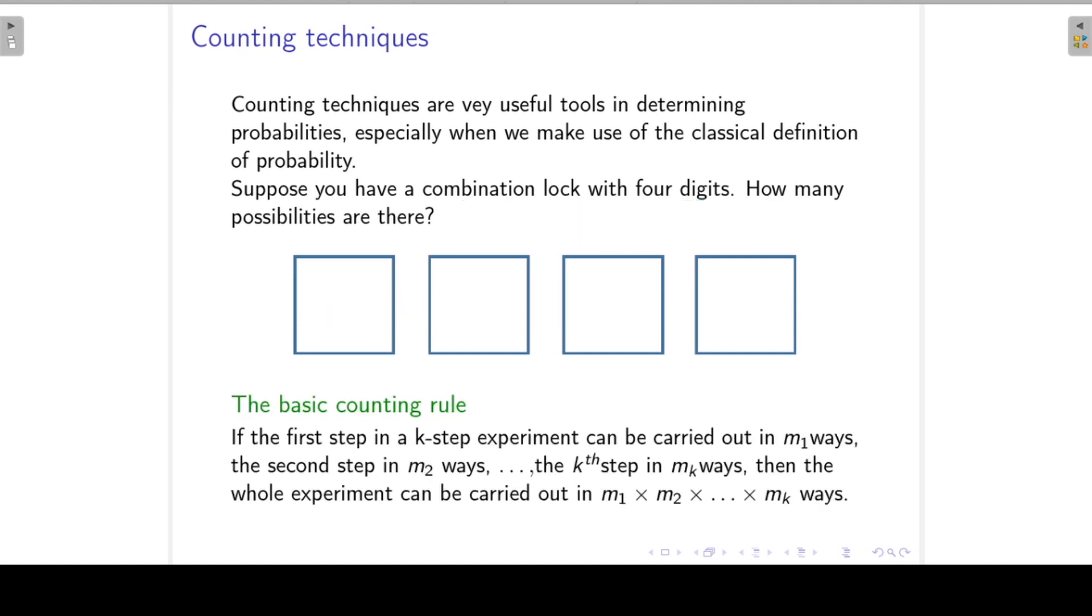That brings us to the basic counting rule. If the first step in a k-step experiment can be carried out in m₁ ways, the second step in m₂ ways up until the k-th step in mₖ ways, then the whole experiment can be carried out in m₁ × m₂ × ... × mₖ ways.